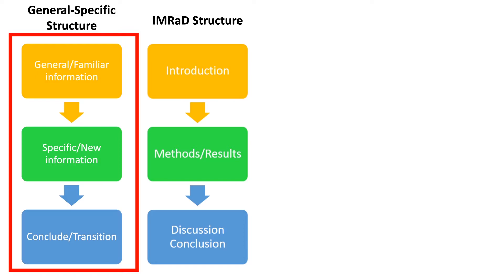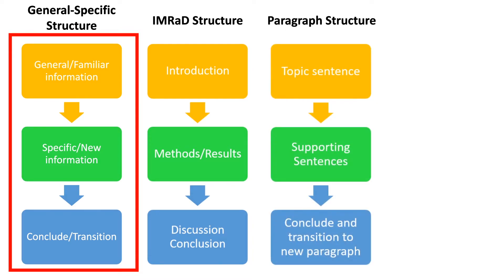The IMRAD structure follows this very nicely. Our introduction is the general familiar information, leading towards our specific aims, methods, and results before we discuss and conclude. Our paragraphs can be structured in the same general-specific way. The topic sentence is the first sentence, and every other sentence in the paragraph is designed to support that familiar information by providing new specific information before we conclude and transition towards a new paragraph.